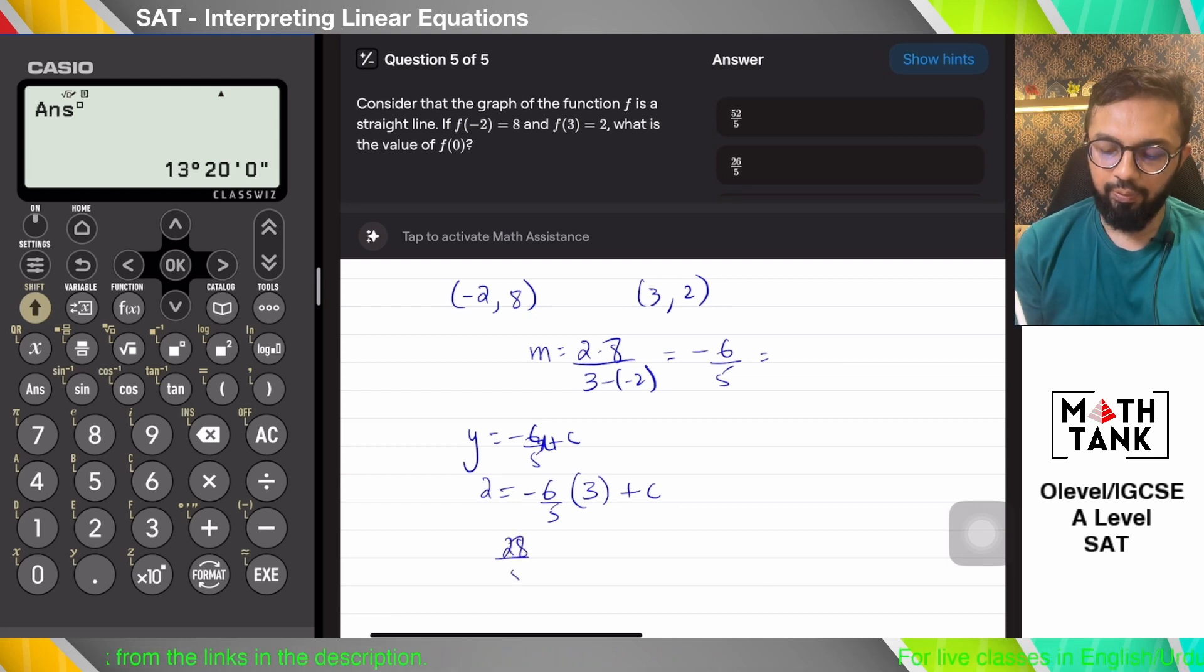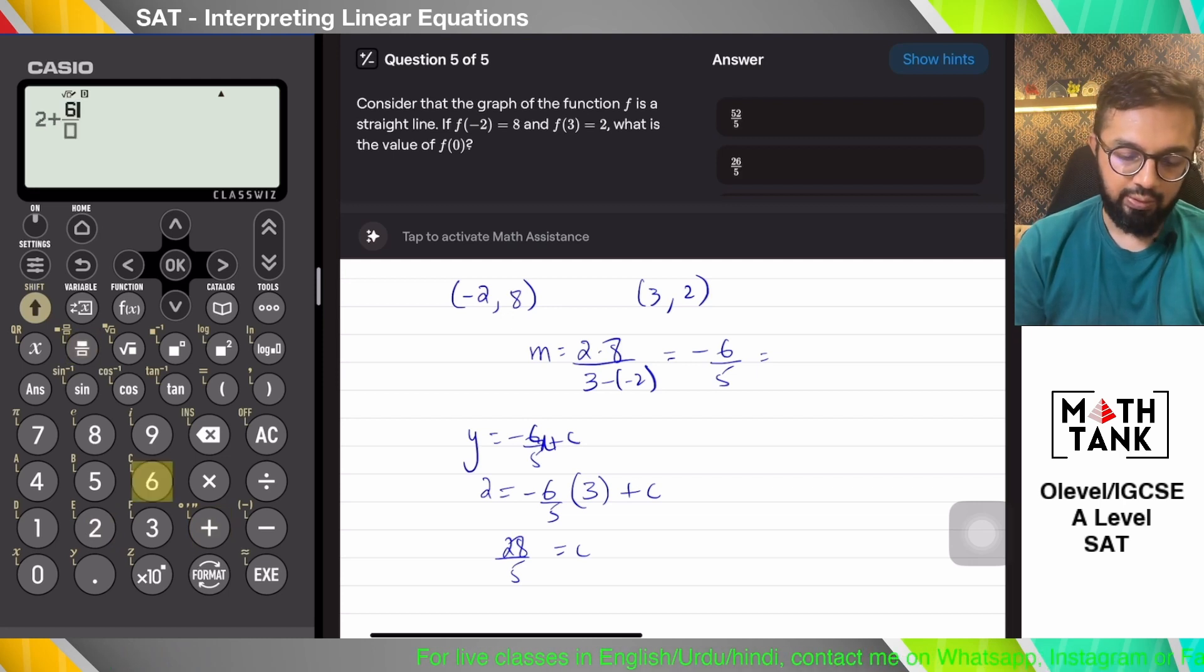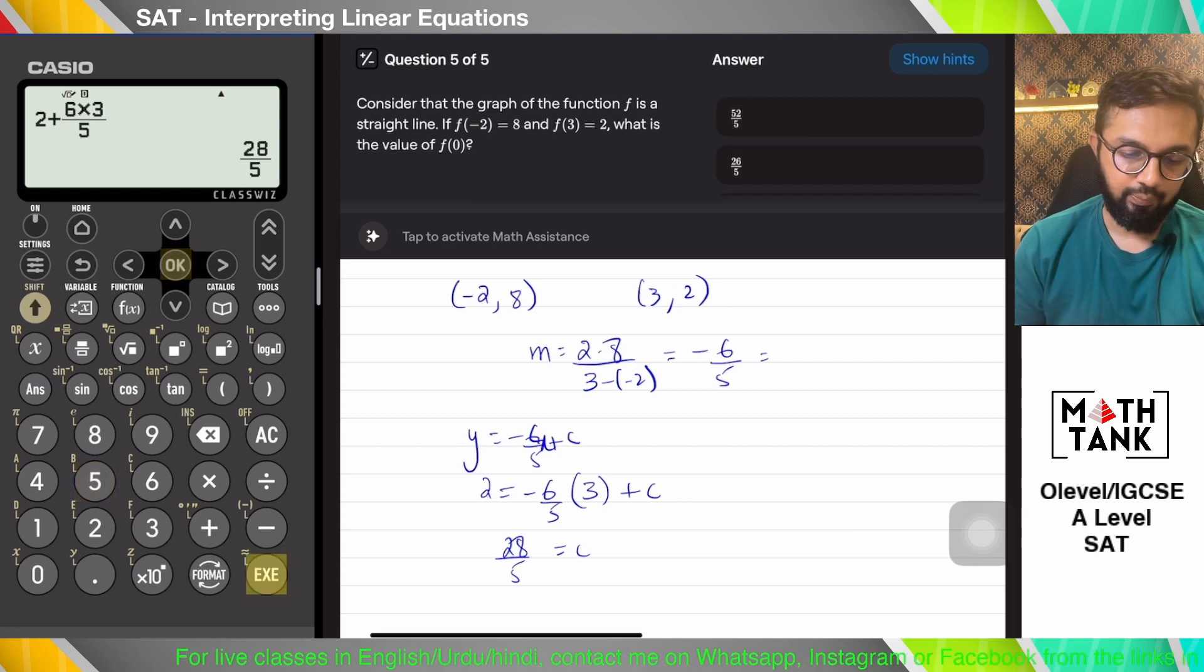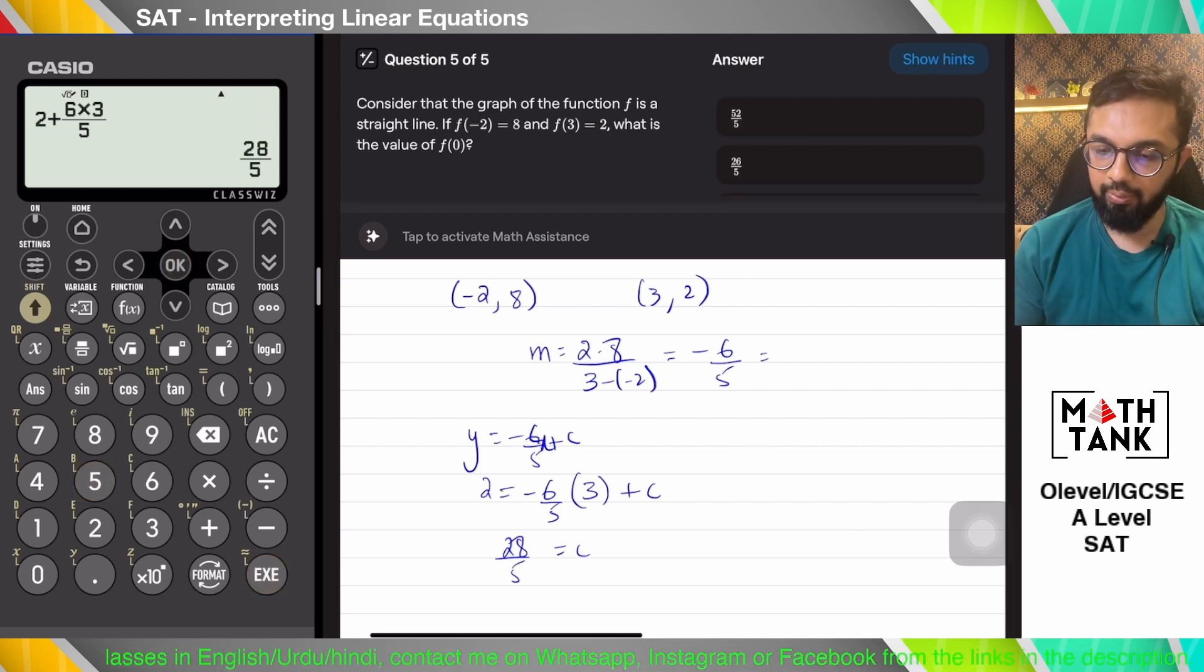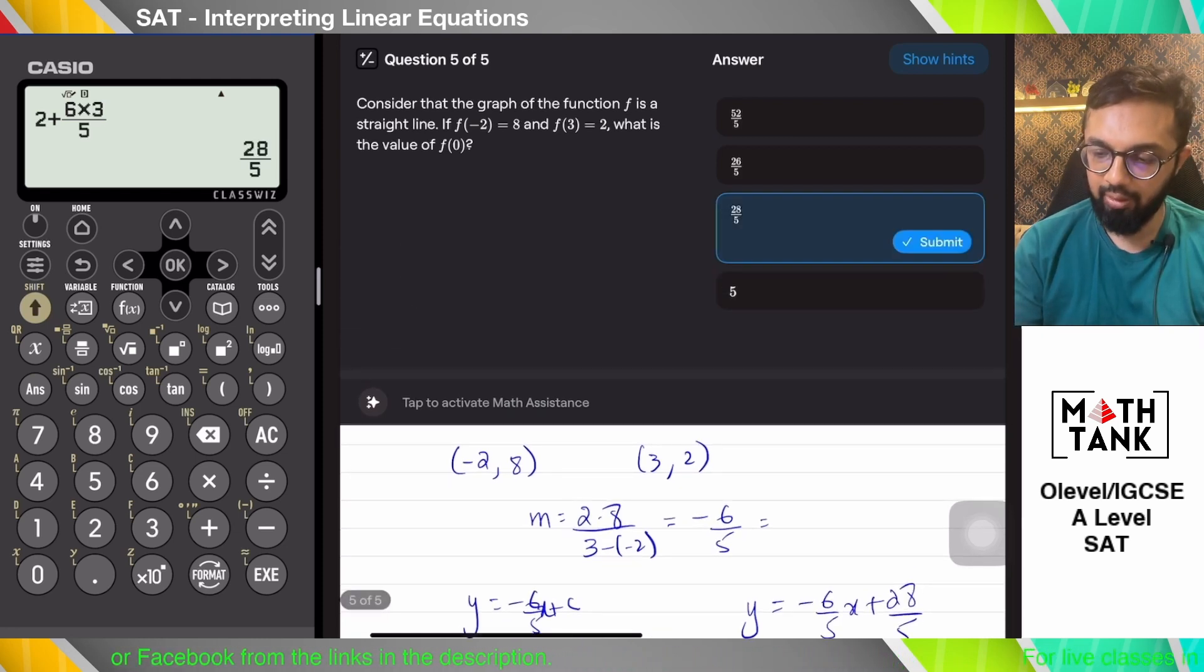I can take any point that I want and write down... So 28 over 5 is c. That's what I'm getting. 2 plus minus 6 into 3 over 5 is 28 over 5. So y equals minus 6 over 5 x plus 28 over 5. When I plug in x equals 0, I get 28 over 5.